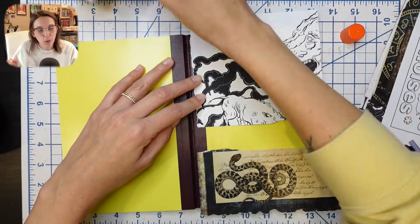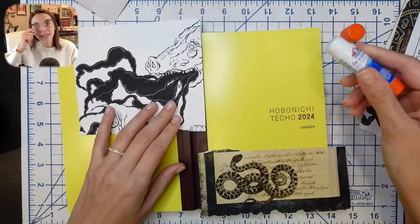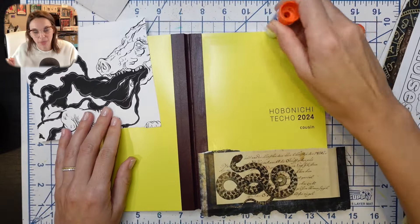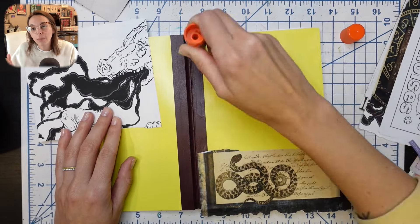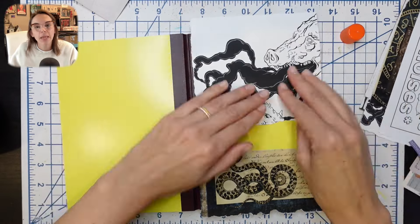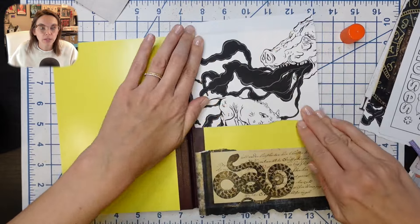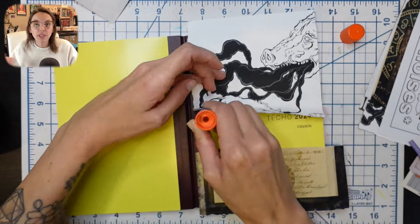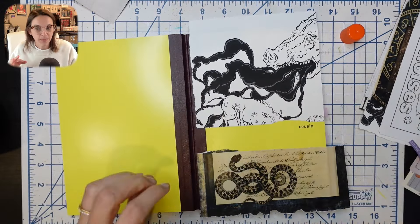But in the meantime, my Hobonichi will be looking nice, which is what we're working on today. Longest intro ever to basically tell you that I am collaging the cover of my 2024 Hobonichi. It is the Cousin Avec, so it is two books, but this year very special - this is my third or fourth year being in a Hobonichi.